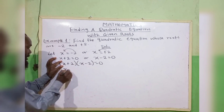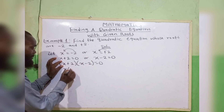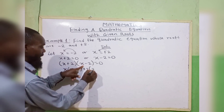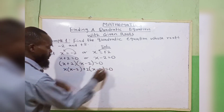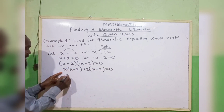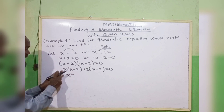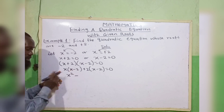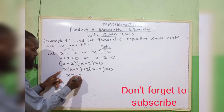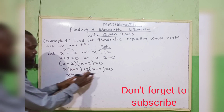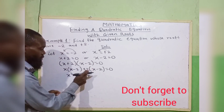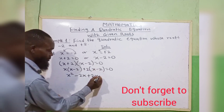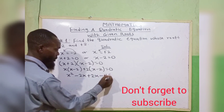We multiply this out. Take x to multiply (x − 2), then take plus 2 to multiply (x − 2) equals 0. So we have x times x = x squared. Plus times minus gives minus 2x. Then plus 2 times x gives plus 2x. Plus times minus gives minus 4, which equals 0.